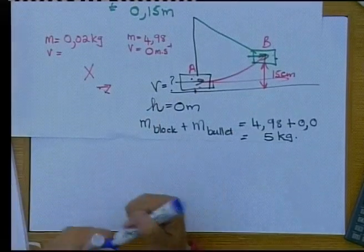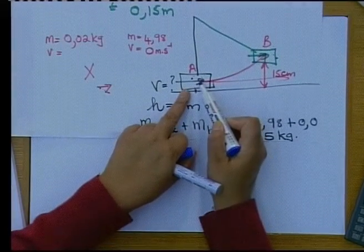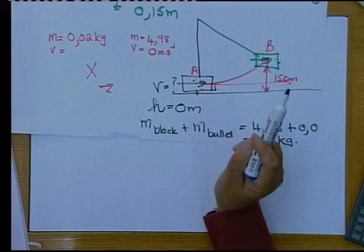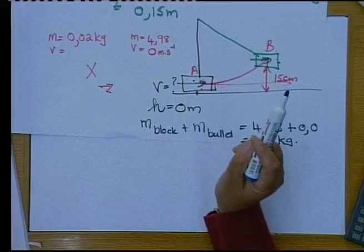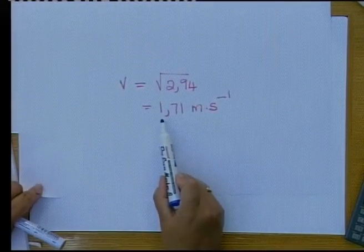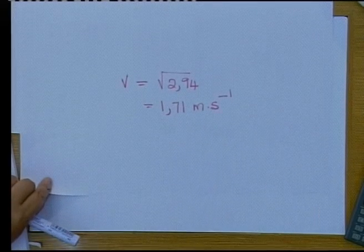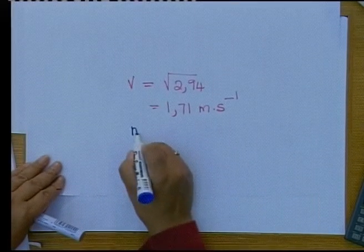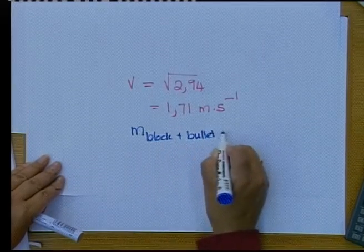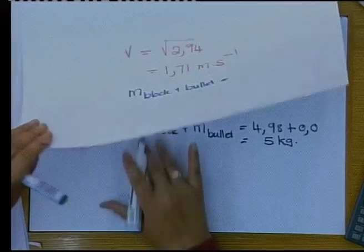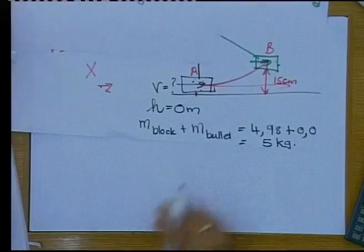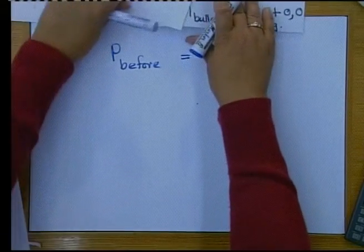After the collision, the block and bullet move together as one. From the previous example, we calculated that their combined velocity is 1.71 m/s, and the combined mass of the block and bullet is 5 kg.